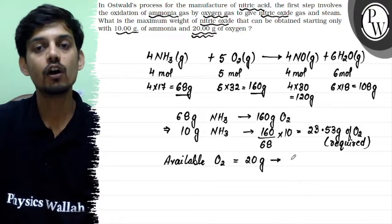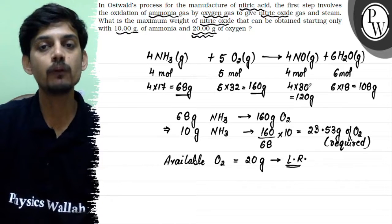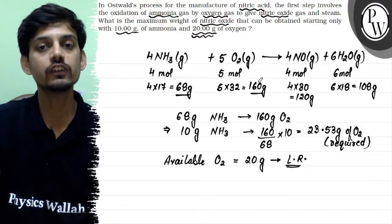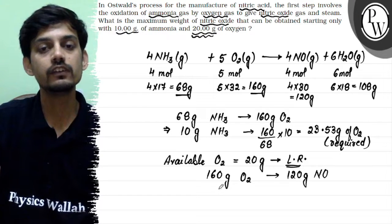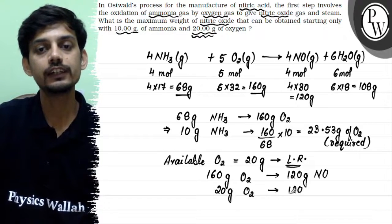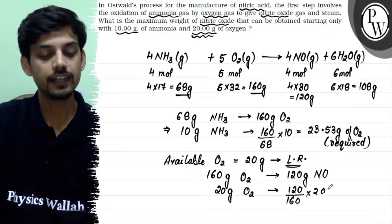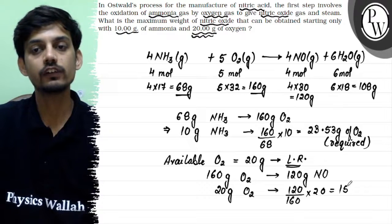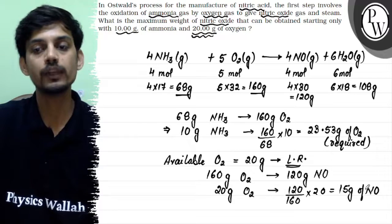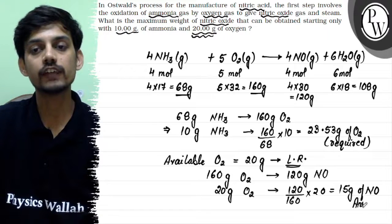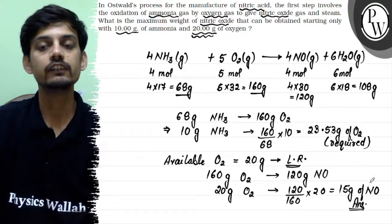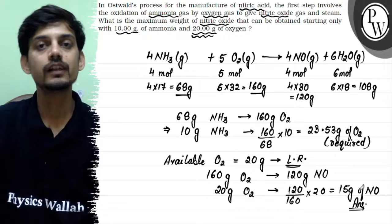That means oxygen is the limiting reagent here, so the nitric oxide amount will be calculated according to oxygen. 160 grams of oxygen will produce 120 grams of nitric oxide, so using the unitary method, 20 grams of oxygen will produce 120 upon 160 into 20, which equals 15 grams of nitric oxide. So in this reaction, when 10 grams of ammonia are oxidized with 20 grams of oxygen, some ammonia will be left over and only 15 grams of nitric oxide will be produced. This is the answer for the given question.